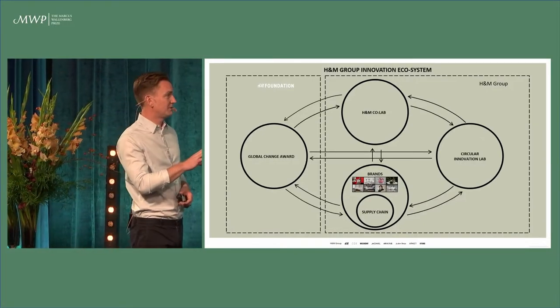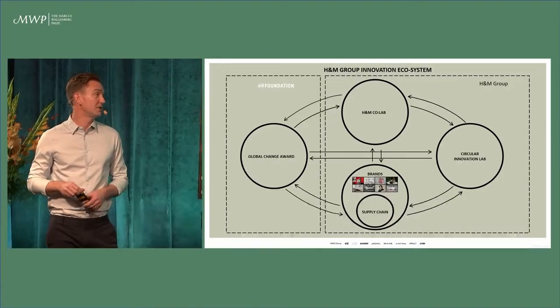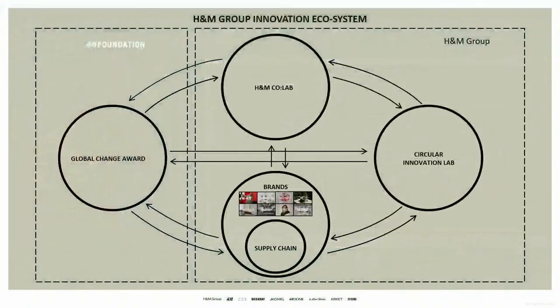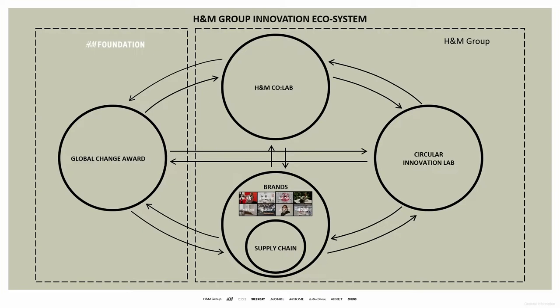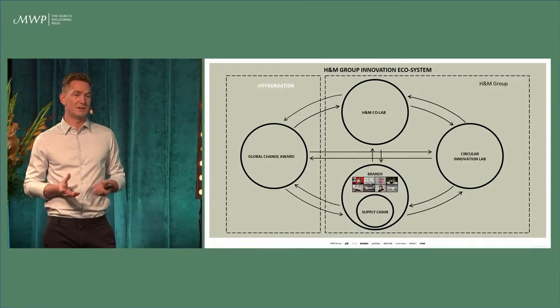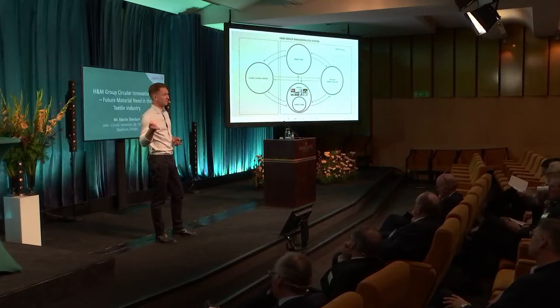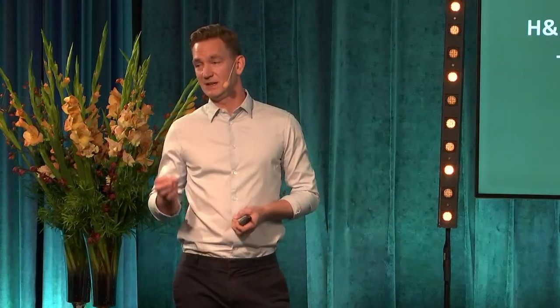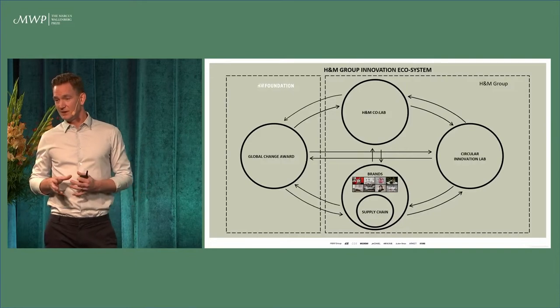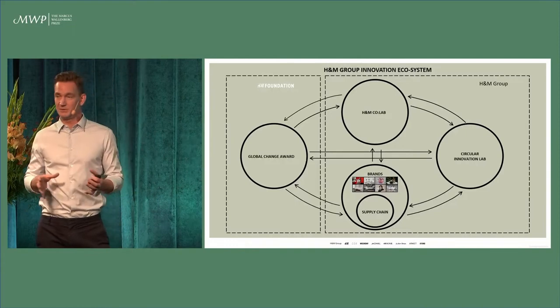The first thing we did was map out how we work with innovators and startups within the H&M Group. In these pictures you can see Circular Innovation Lab, which is my team, working with scouting, testing, evaluating new and interesting processes and materials in our supply chain. This includes collaboration with our brands, because the brands are demanding new sustainable materials with certain quality, hand feel, touch and feel. Through the brands, we work together with our supply chain. We don't own our production, but we have very close cooperation with our supply chain. That's the channel we use to evaluate these processes and materials in real life.